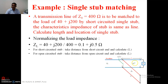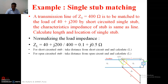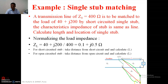This transmission line is not properly terminated, so there will be reflection and creation of standing waves. To match the transmission line, we connect a short-circuited stub or an open-circuited stub. The stub may be either short-circuited or open-circuited.